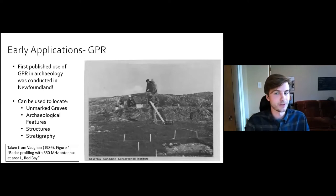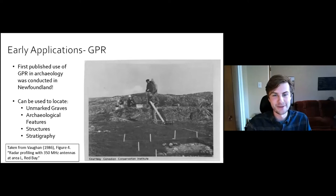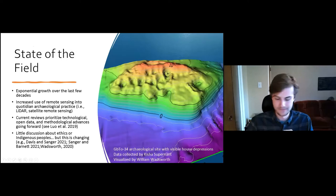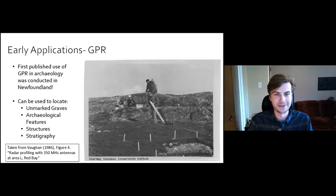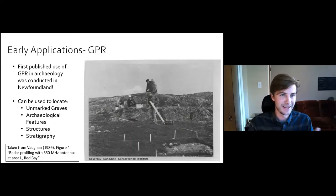The first published use of GPR in archaeology was actually relatively late compared to other methods — it took place in the 1980s, and actually took place in Newfoundland, Canada. On the right you can see the study by Vaughn showing a researcher dragging an old GPR antenna using a 2x4. That has changed — we no longer use a 2x4. GPR is frequently used to locate unmarked graves today, and it's actually not that different than when they first did it in 1986. Today, GPR can find unmarked graves, archaeological features, structures, and record stratigraphy.